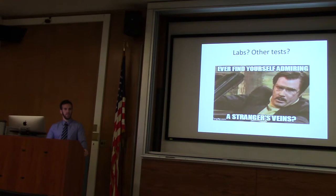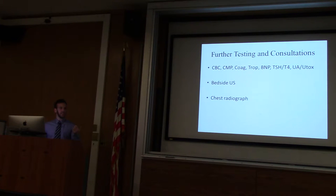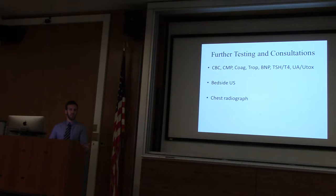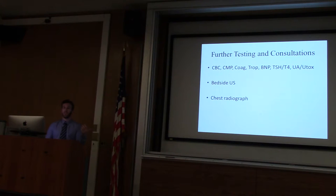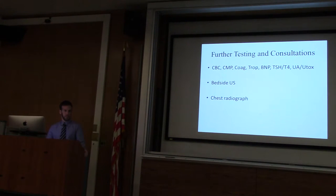Any imaging? Ultrasound. Also TFTs. So full list: CBC — check if the patient is anemic causing high-output heart failure. CMP — liver function and renal function. Coags — patient has AFib with RVR, may be a candidate for anticoagulation based on CHA₂DS₂-VASc score. TSH/T4. Urine tox for possible sympathomimetic — we're not getting great history. Bedside ultrasound and chest X-ray.